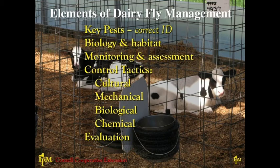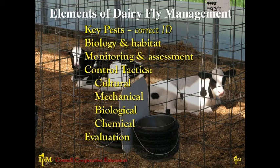We'll look at monitoring and assessment — monitoring animals and fly numbers that could cause economic or health problems. Then we'll look at different control tactics, thinking about a multi-pronged approach combining cultural, mechanical, biological, and chemical means. One of the most important things about an IPM approach is evaluation: how good was our control effort, what areas could we look at more closely, and what should we do next time we face that particular type of problem?